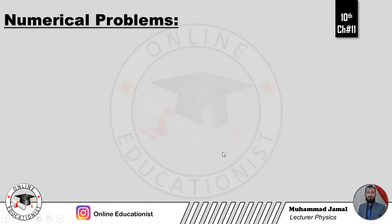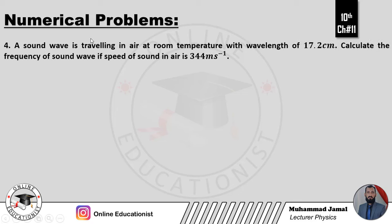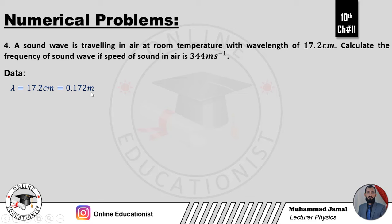Problem number 4: A sound wave is traveling in air at room temperature with wavelength of 17.2 cm. Calculate the frequency of the sound wave if speed of sound in air is 344 meter per second. Data: lambda equal to 17.2 cm — meter mein convert karenge 100 se divide karke: 0.172 meter. Frequency f find karni hai. V equal to 344 meter per second.